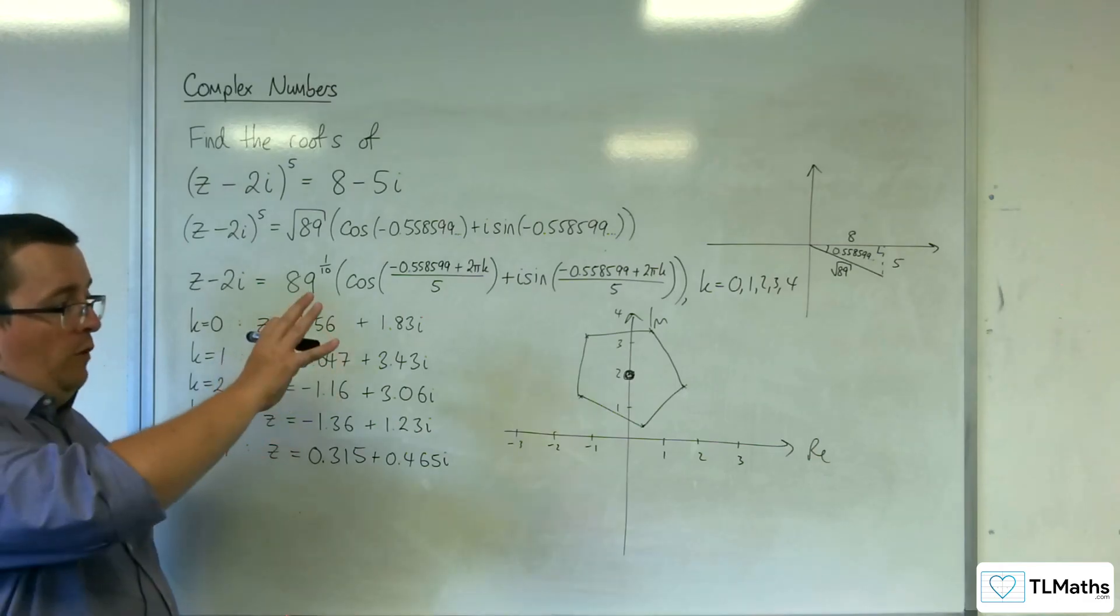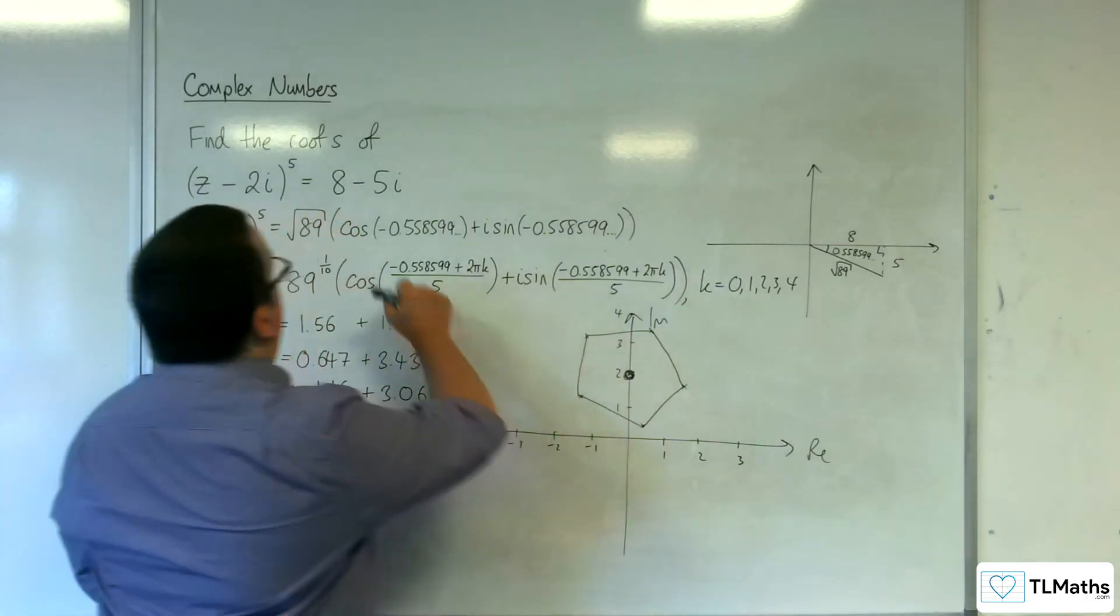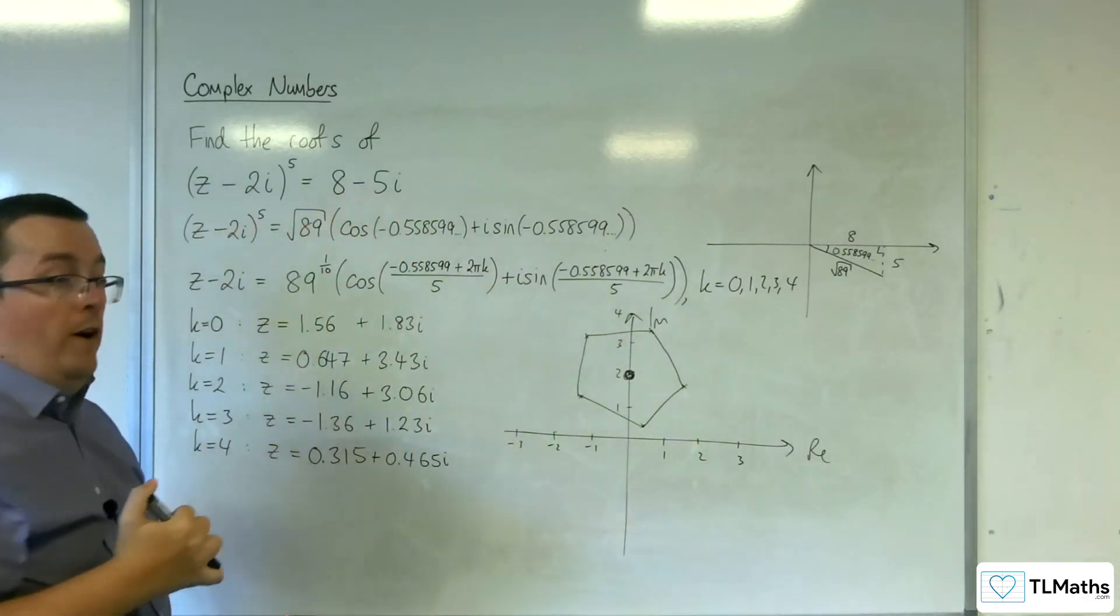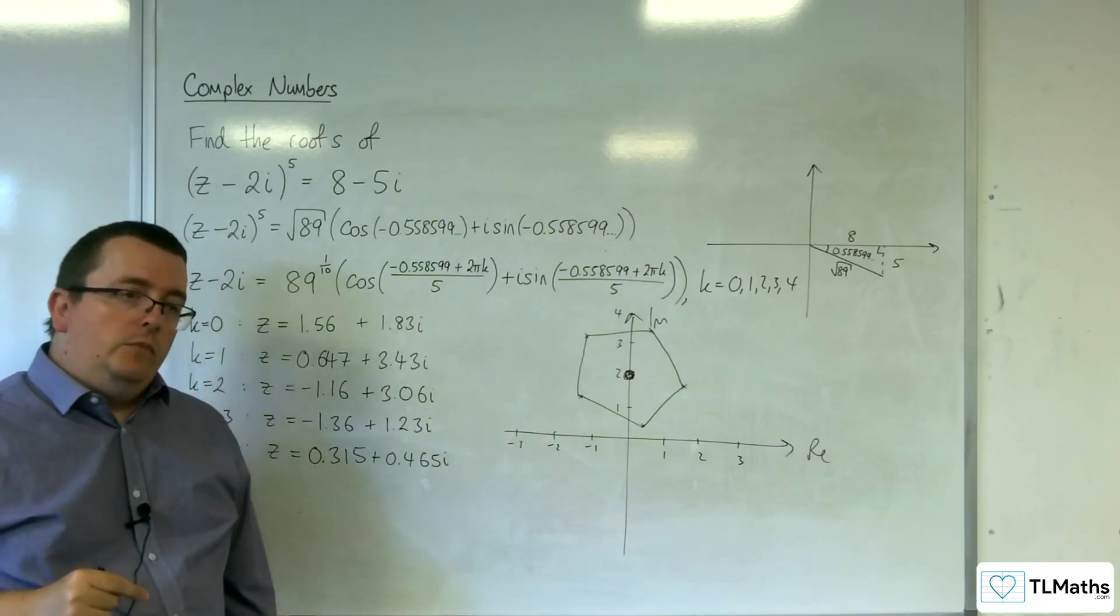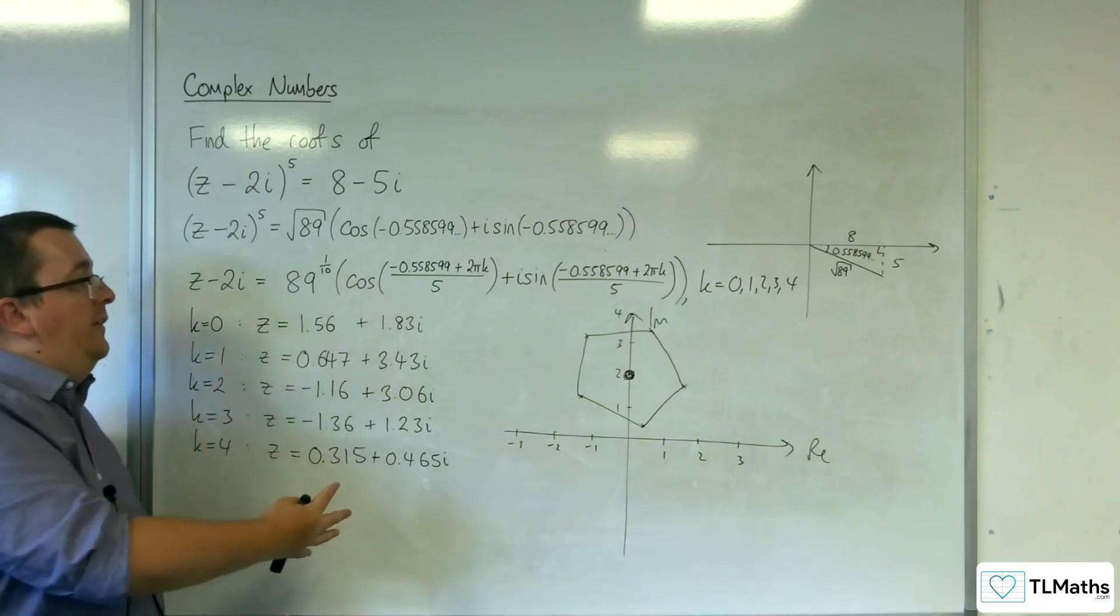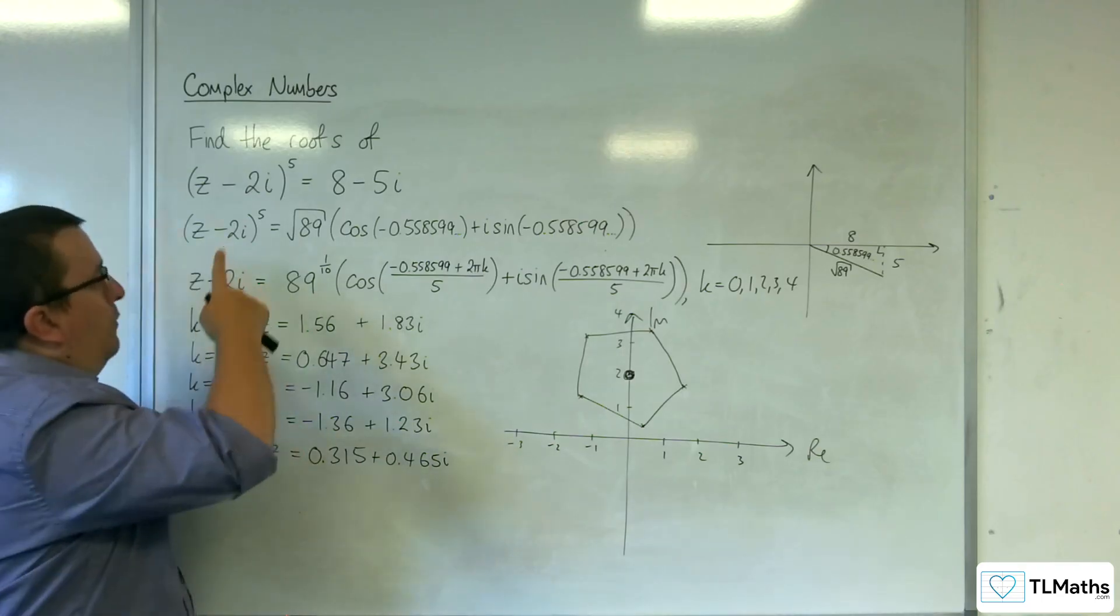Effectively, you've translated the pentagon upwards from the origin now to 2i. And you've got this rotated figure of the pentagon around because you're working with 8 take away 5i rather than it being equal to 1. And so that is how you can find the roots for that type of equation.